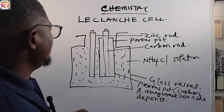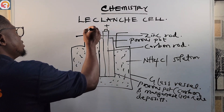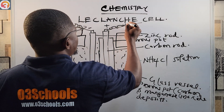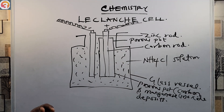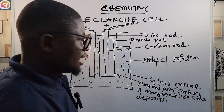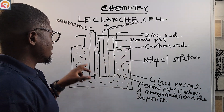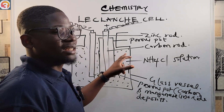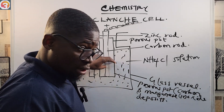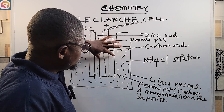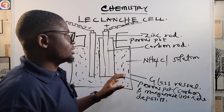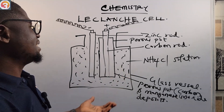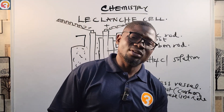The zinc side is negative (anode) and the carbon side is positive (cathode). So this is a complete diagram of the Leclanché cell: a zinc rod containing ammonium chloride solution, a porous pot with a carbon rod and manganese(IV) oxide inside, all within a glass vessel. The Leclanché cell is the most common of all cells and is found in torches, radios, and other home appliances.